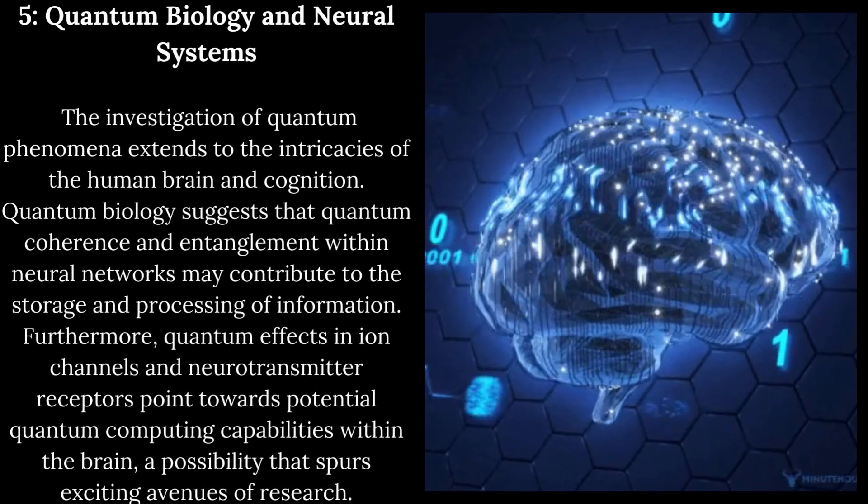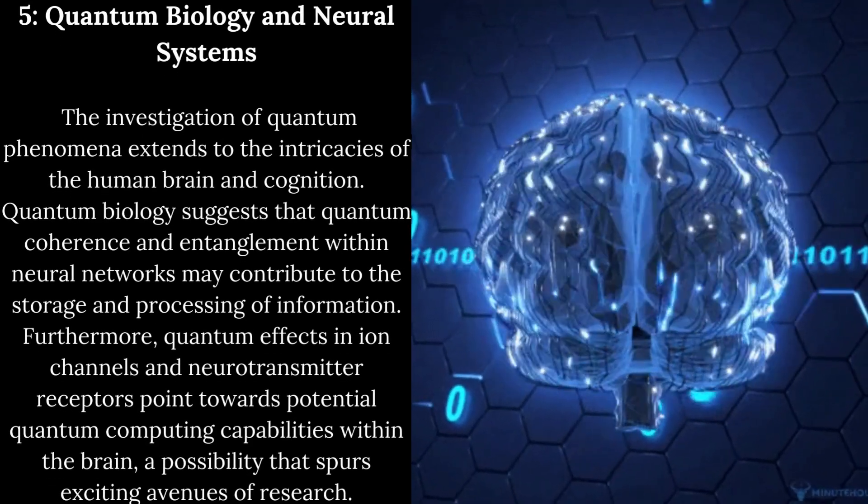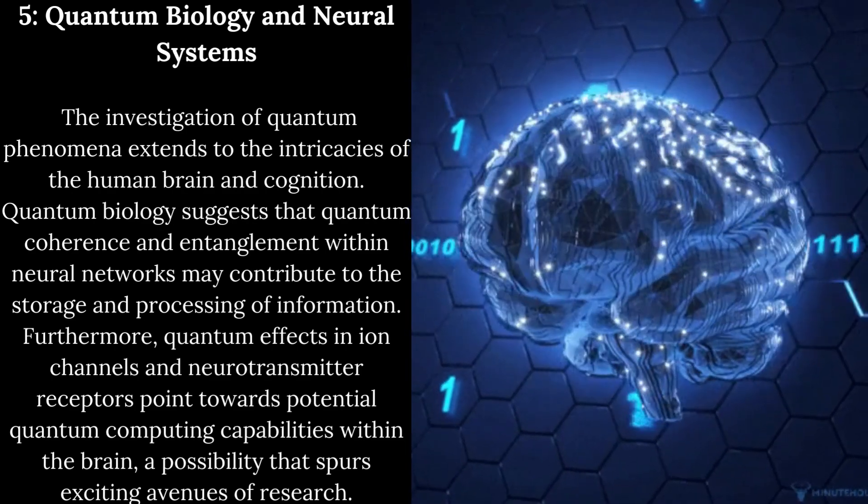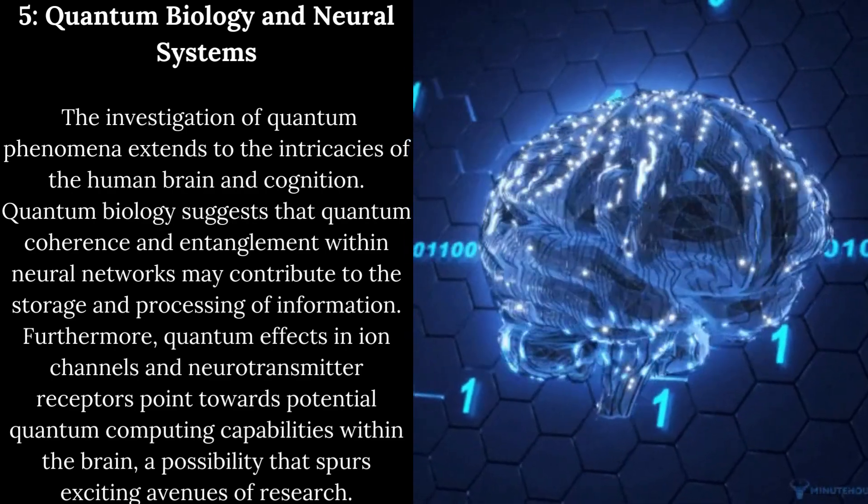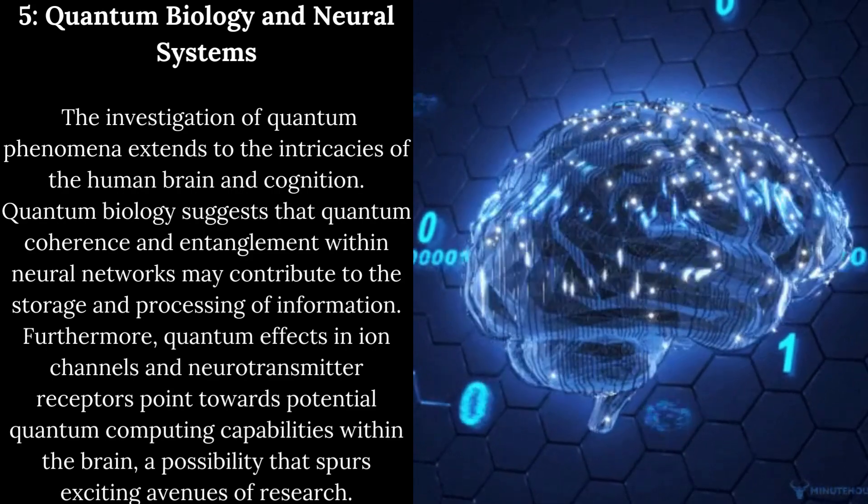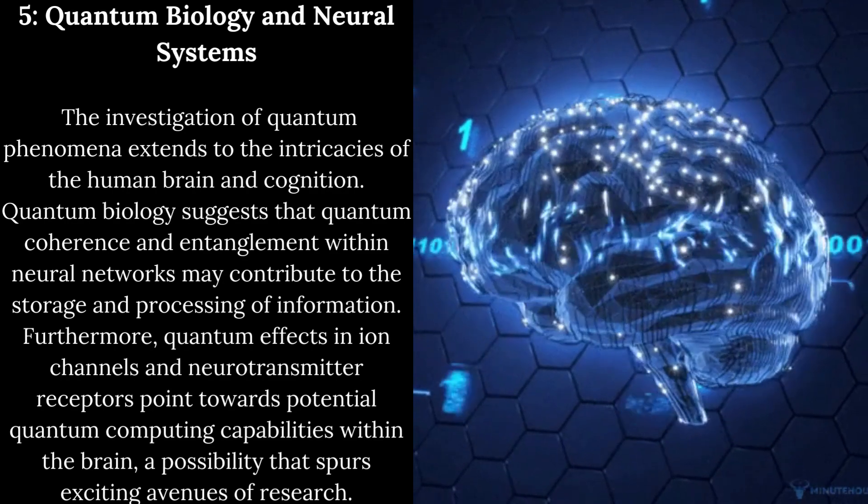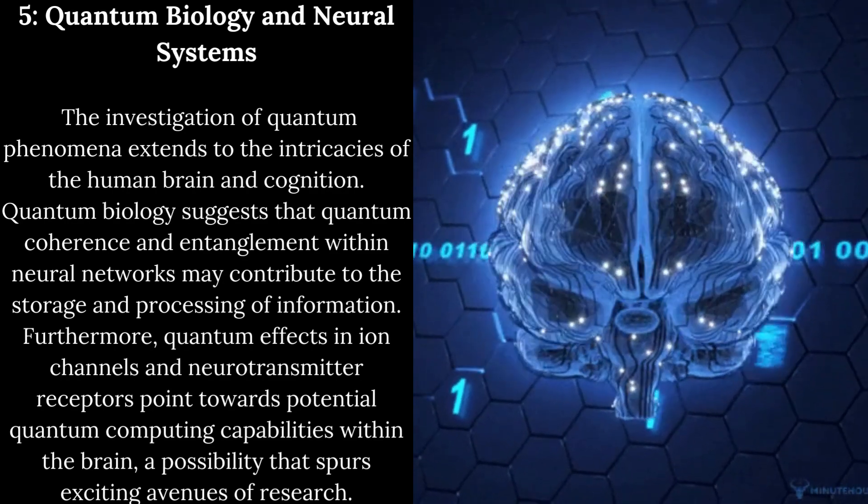5. Quantum biology and neural systems. The investigation of quantum phenomena extends to the intricacies of the human brain and cognition. Quantum biology suggests that quantum coherence and entanglement within neural networks may contribute to the storage and processing of information.